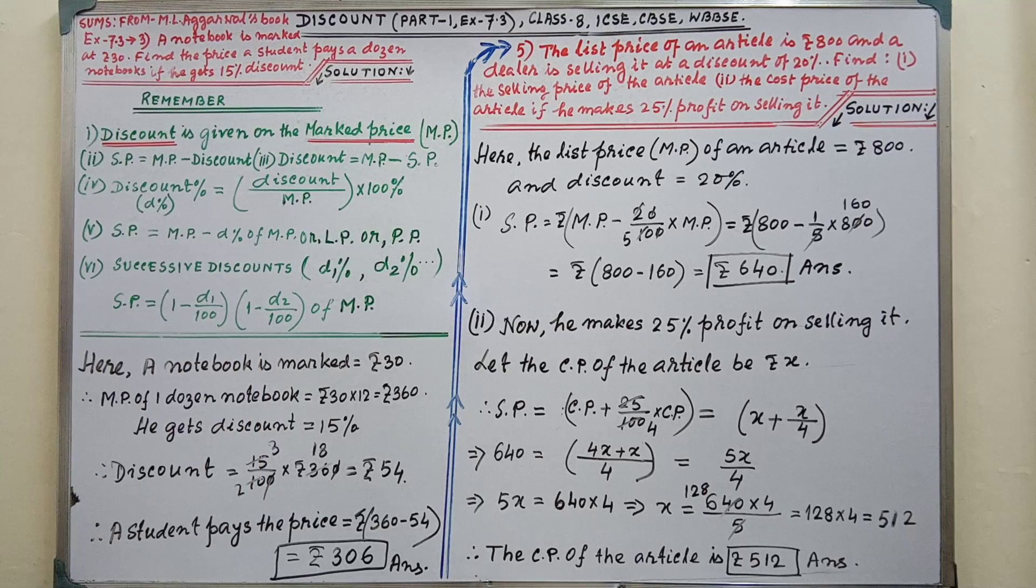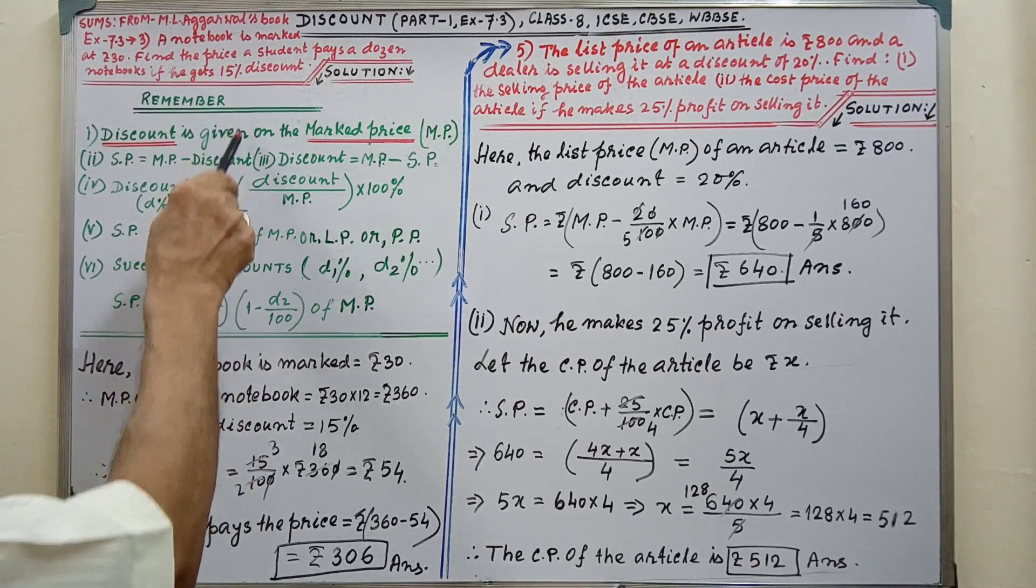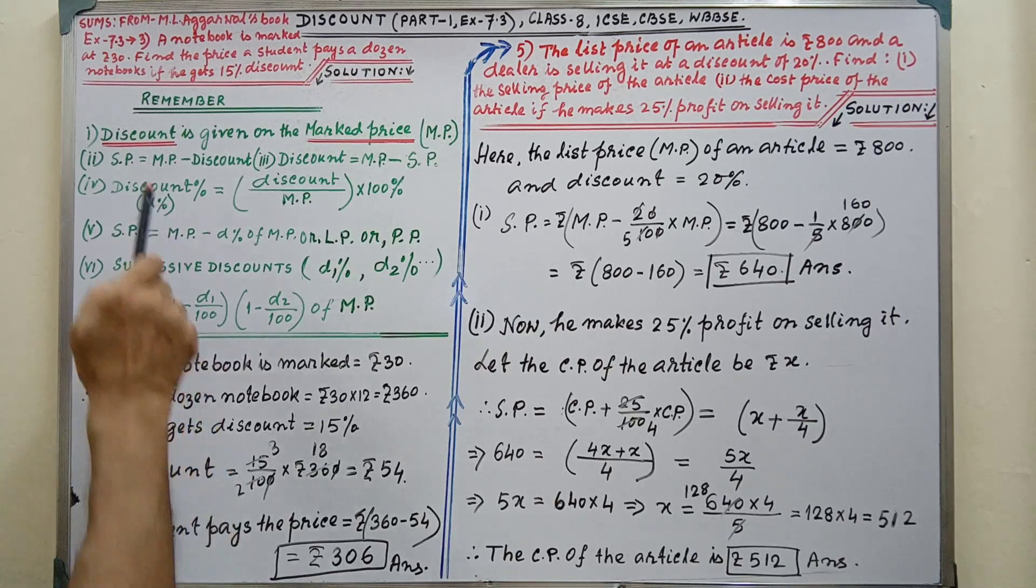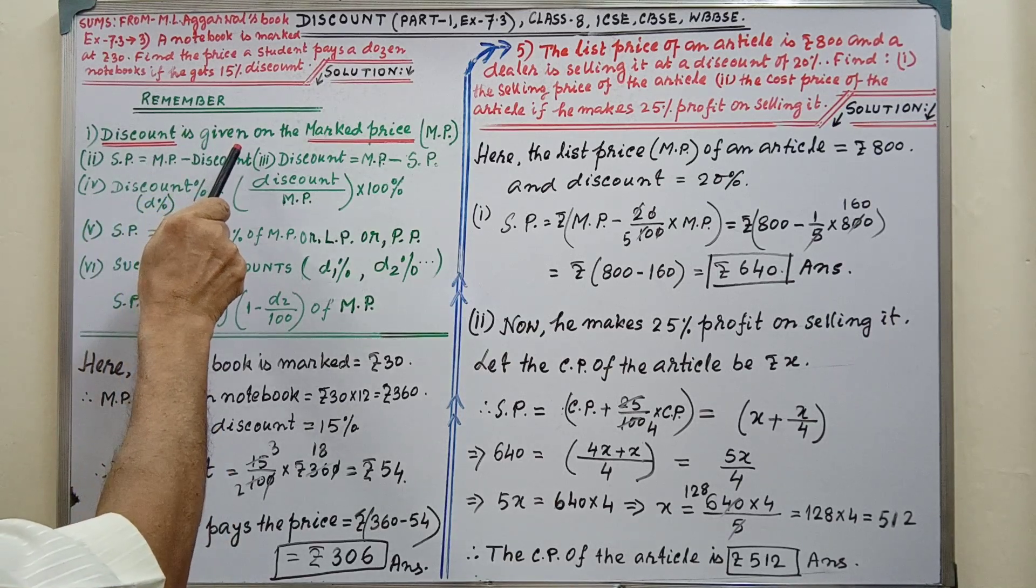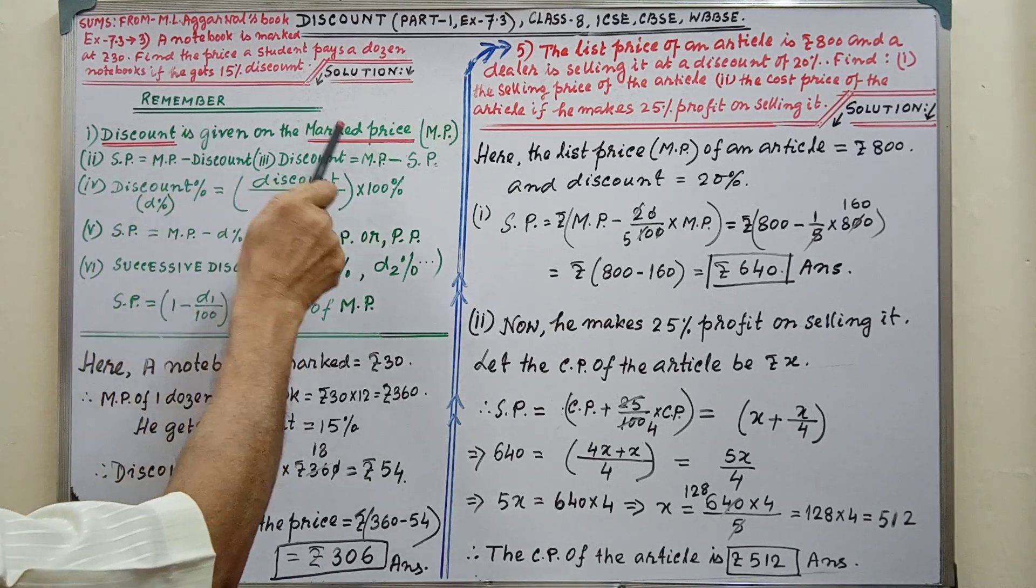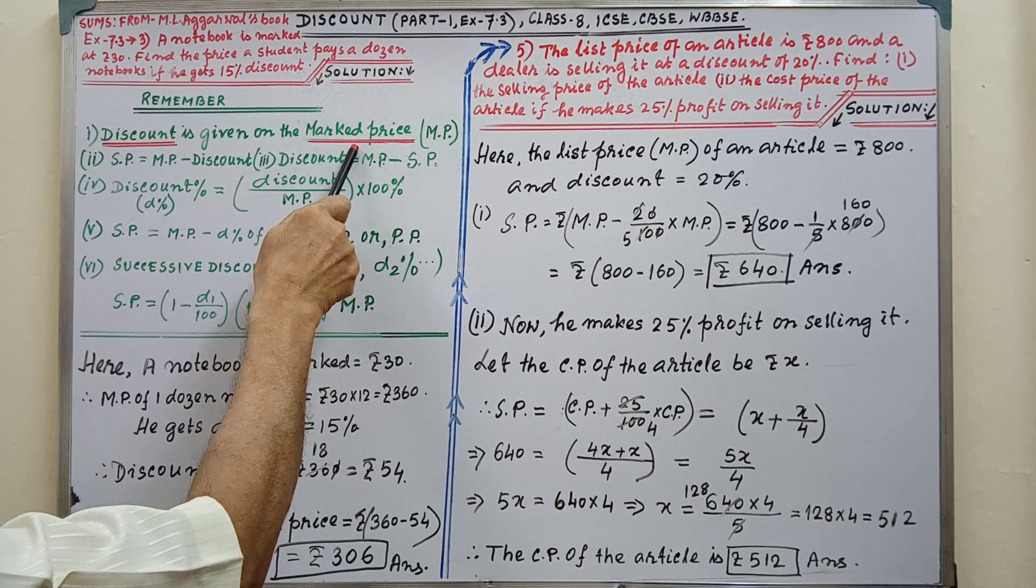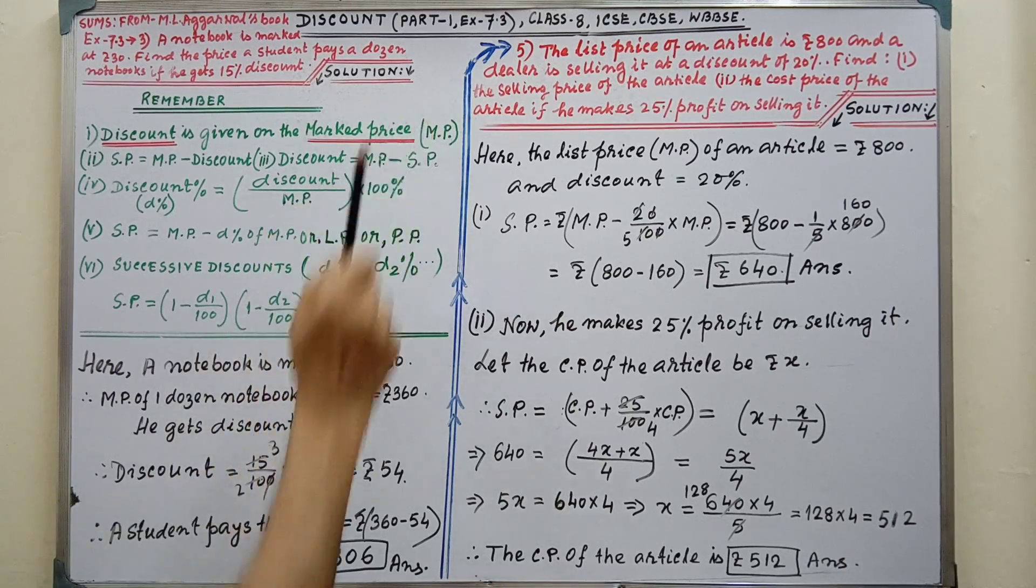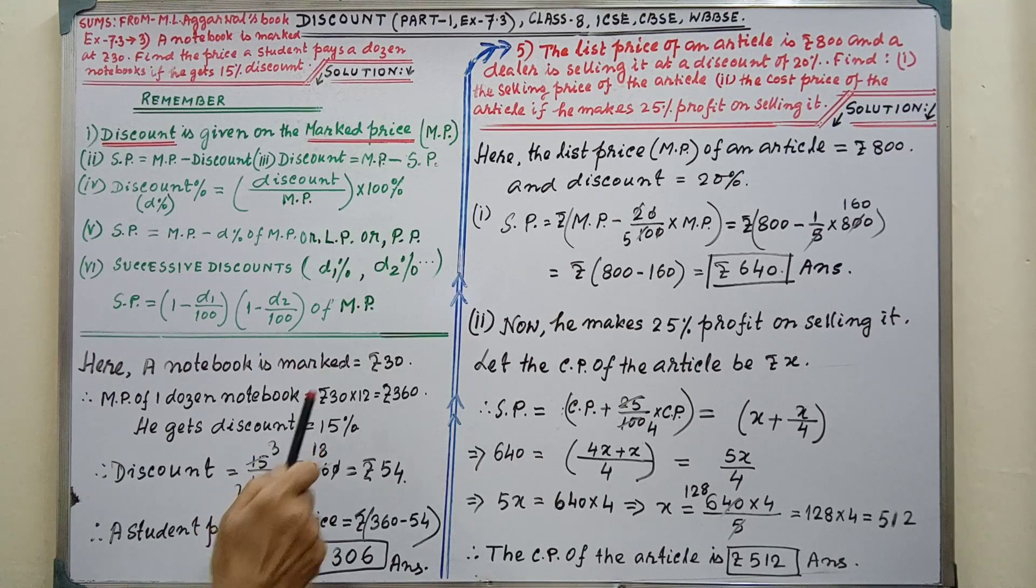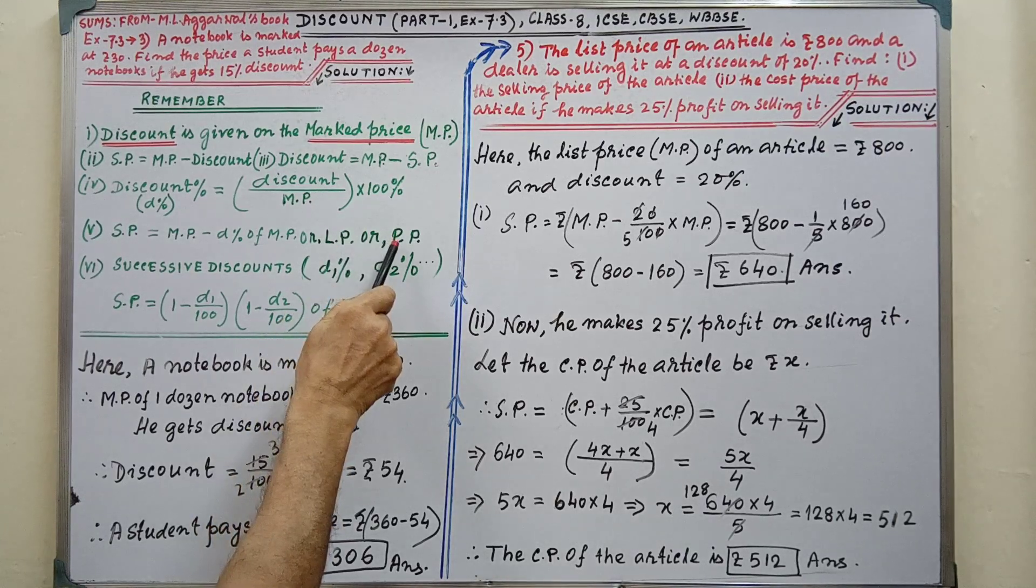Before solving this sum, you have to remember this. This is vital. Please pay your full attention. Discount is given on the marked price only. You have to calculate discount on marked price only. Marked price also named as list price or PP.